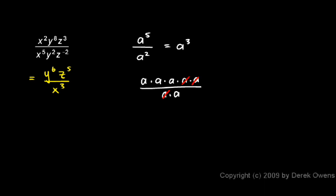So let's apply that concept back in our original problem. I want to look at the y's first. You see a y to the eighth up top and then a y squared down below. The eight minus two gives me a six, so we have y to the sixth.